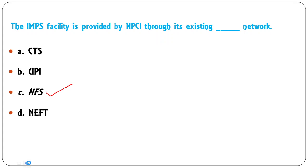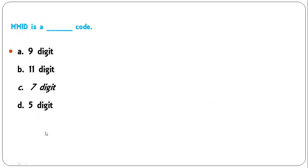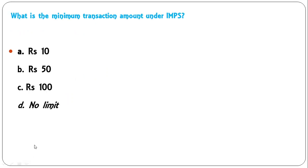What does MMID stand for? The options are: movable money identification number, mobile money information number, mobile money identity number, mobile money identification number. The correct full form of MMID is mobile money identification number — D is correct. MMID is how many digits? The options are: 9 digits, 11 digits, 7 digits, or 5 digits. The correct answer is 7 digits — C is correct. There are 7 digits in the MMID code used for IMPS transactions.